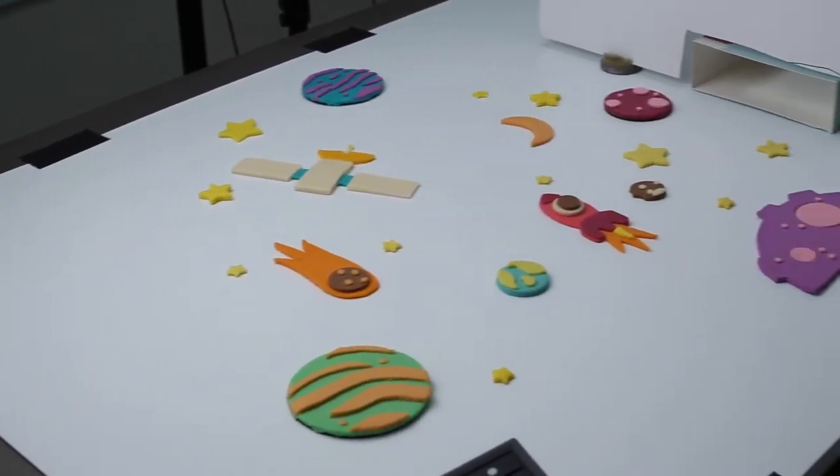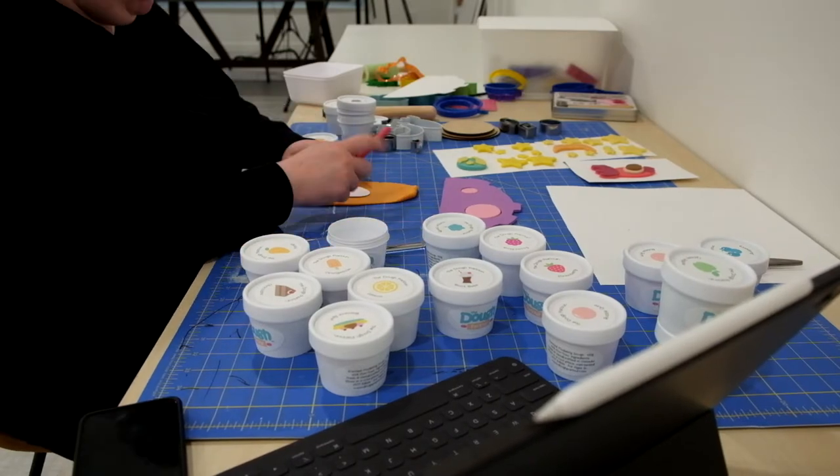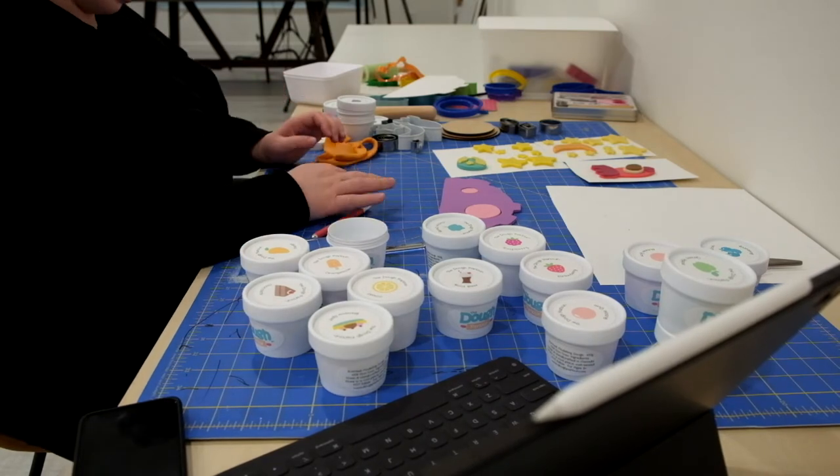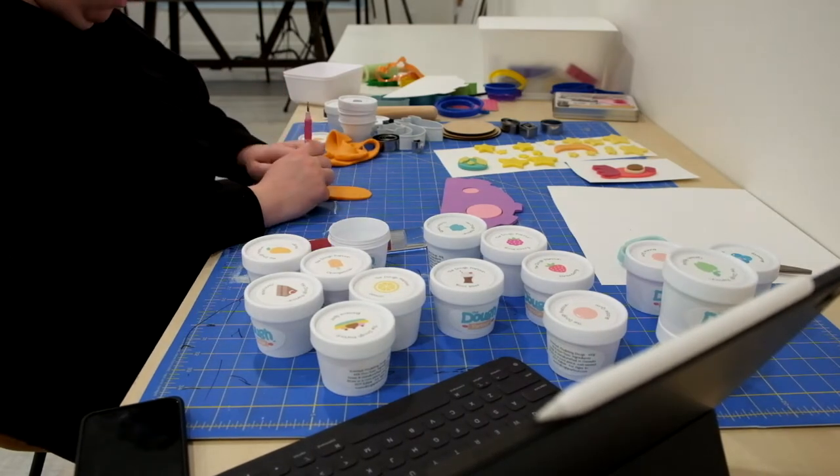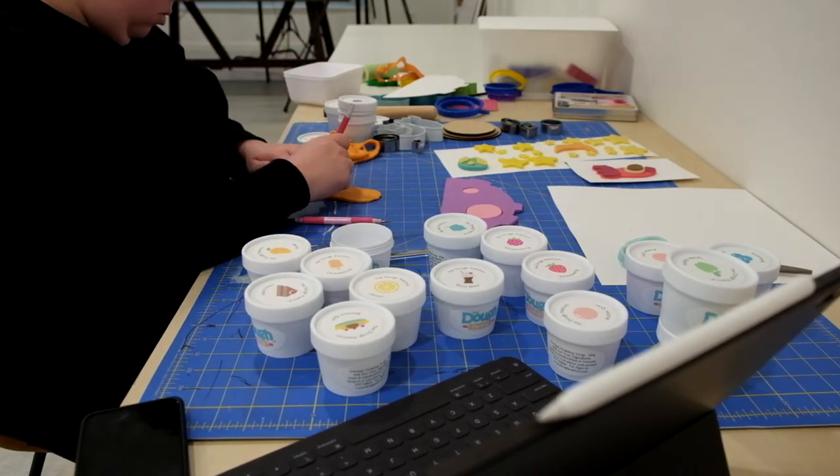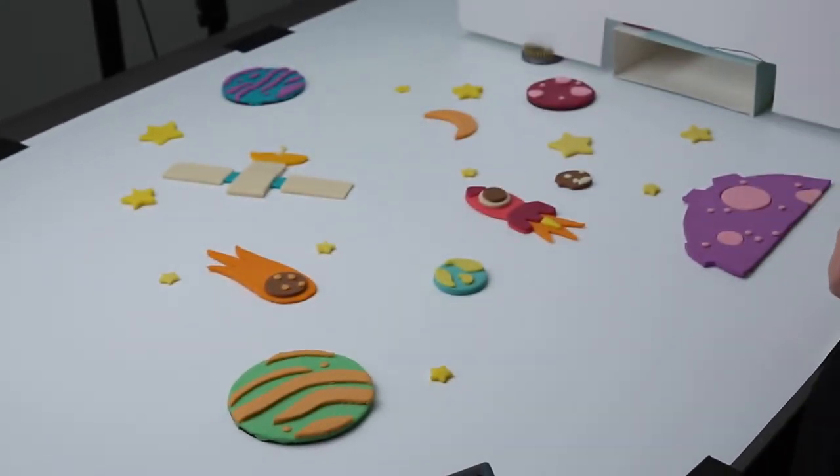So then the next scene we jumped into was the space scene. Again we had our paper templates, we would cut around them to create our different planets. Some of the stuff we did freehand because I think the planets are fun to have these like wavy lines in them and just kind of fun additional elements. So a lot of the space stuff we did freehand or we used circular cookie cutters to cut out planets and moons and then we just added freehand exacto cut elements over top. And then we built the space scene and shot it, but this one we didn't build it in a way that it was going to be subtractive.